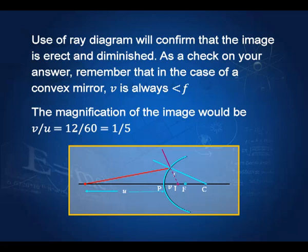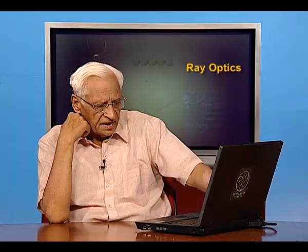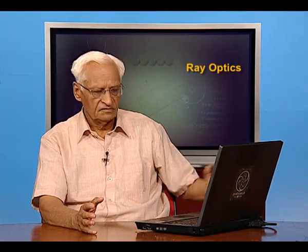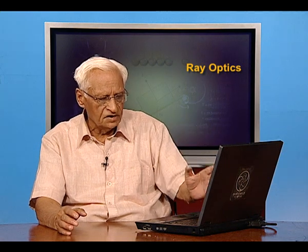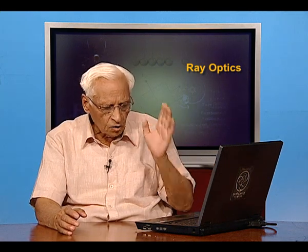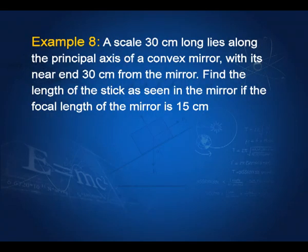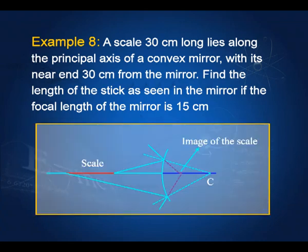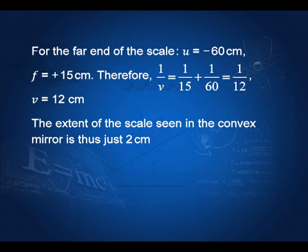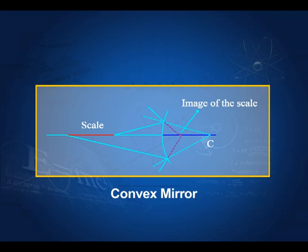This is important to remember: for a convex mirror, the image is always smaller in size, wherever the object is. It is always virtual, erect, and smaller. As an illustration, a 30-centimeter scale placed in front of a convex mirror forms a virtual image only 2 centimeters long — so the image formed by a convex mirror is always smaller in size.